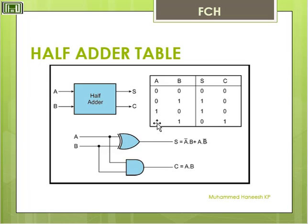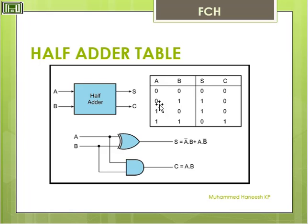Now the last input: 1, 1. 1 and 1 is equal to 0 with a remainder of 1. So Sum is equal to 0 and Carry is equal to 1. This is the Half Adder table: 0,0 Sum=0 Carry=0; 0,1 Sum=1 Carry=0; 1,0 Sum=1 Carry=0; 1,1 Sum=0 Carry=1.